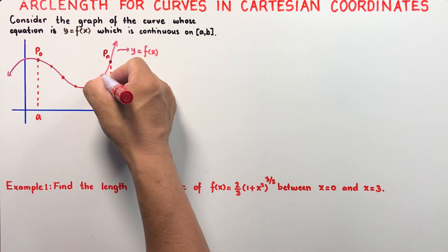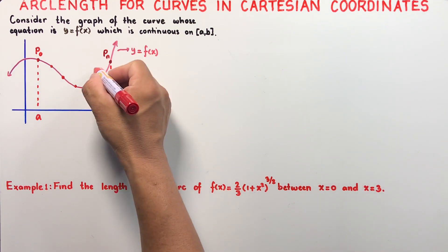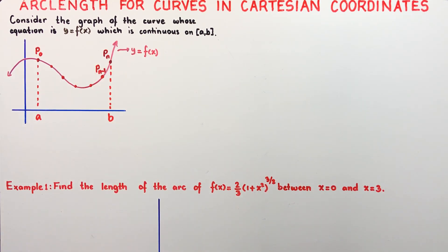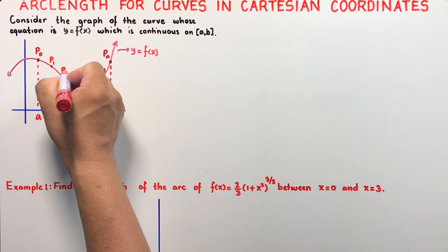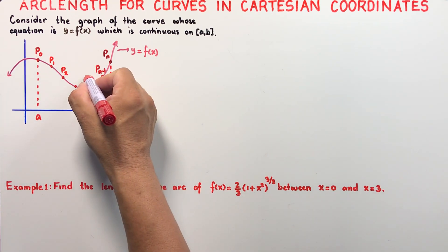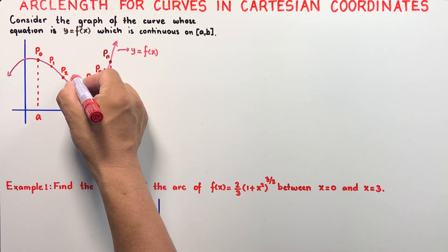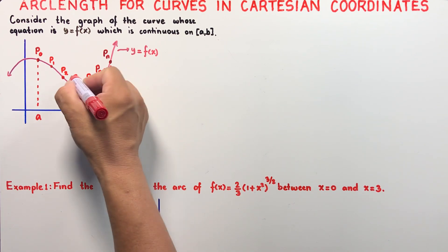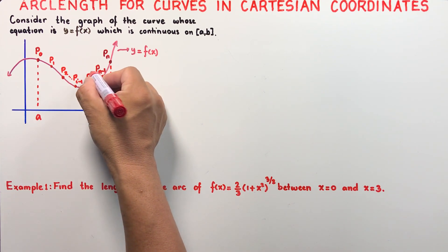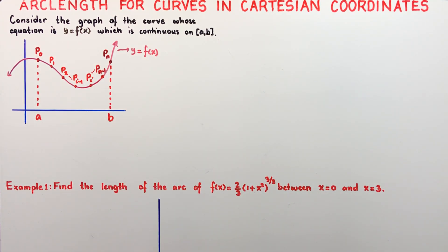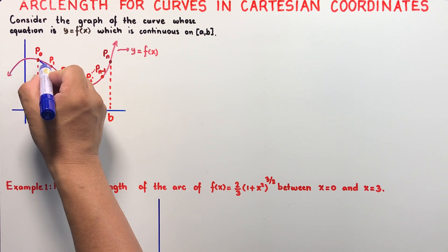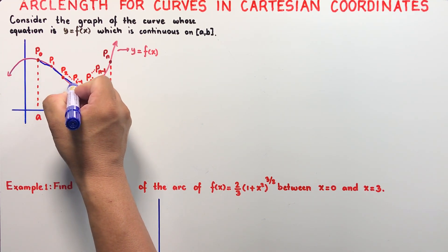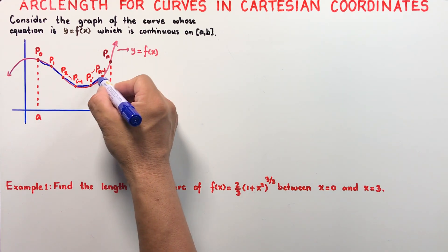Suppose these are the subdivisions of this arc. So if this is p sub n, this is p sub n minus 1. And if this is p sub 0, this is p sub 1, this is p sub 2, and so on. Suppose this is our arbitrary point p sub i, and a point before that is p sub i minus 1. The idea is to approximate these sub-arcs by chords — straight lines approximating the length of each sub-arc.